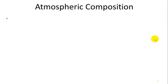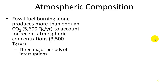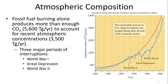The burning of fossil fuels has significantly increased the amount of carbon dioxide in the atmosphere — up from about 35,000 units to 56,000 units, roughly 50% more — and has continued to increase. There have been three major periods of interruption: World War I, the Great Depression, and World War II, where we've seen a flatlining of carbon dioxide emissions due to a reduction in economic activity.